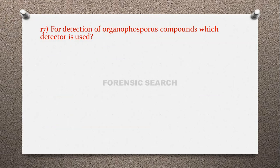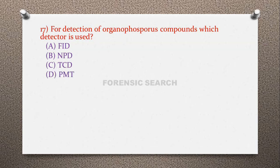Question 17: For detection of organophosphorus compounds, which detector is used? Option A: FID, option B: NPD, option C: TCD (thermal conductivity detector), option D: PMT (photomultiplier tube). The correct answer is option B — nitrogen phosphorus detector (NPD) is used for detection of organophosphorus compounds in biological matrices.